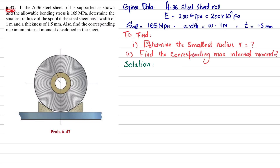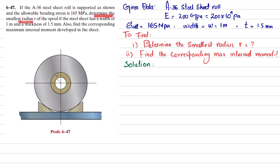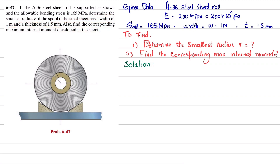Welcome back. Problem 6-47: if a A36 steel sheet roll is supported as shown, and the allowable bending stress is 165 megapascal, determine the smallest radius r of the spool. You can see this is the spool of A36 steel sheet having radius r, supported on this wedge.